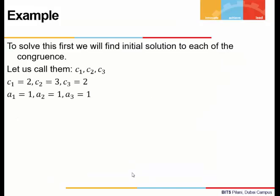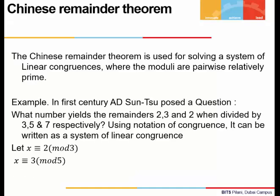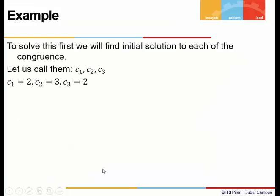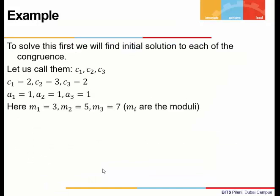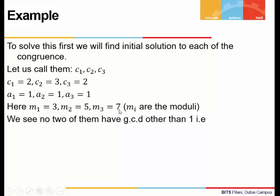We know that each congruence starts with x is congruent to your value, x ≡ 2. We don't have a coefficient here, so our a₁ is 1, a₂ is 1, and a₃ is 1. Come to our modulus. The first one has modulus 3, second congruence has modulus 5, we call it m₂. m₃ is 7, which is the modulus of the third congruence.